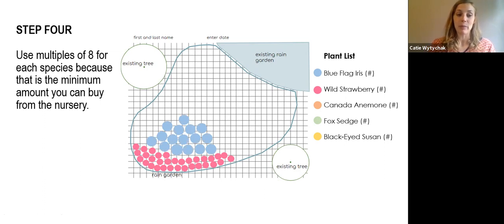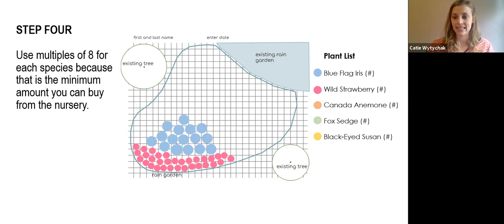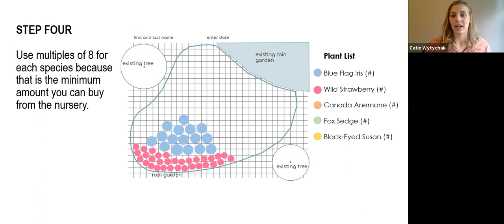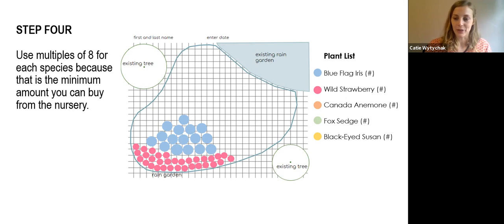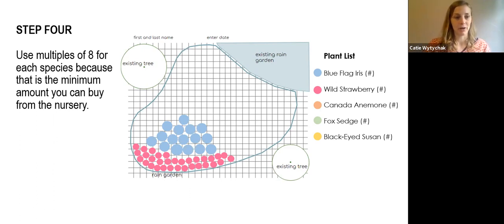When you go to buy plants, nurseries will usually have a minimum order number for each species. The nursery that we're going to use requires that you have at least eight of each species, and then you have to have multiples of eight. For my wild strawberry, I want a lot of them, so maybe I'll have 32. Whereas my blue flag iris, maybe I just want 16 of those. So you can do as many circles as you want, but it does need to be a multiple of eight — so there's a little bit of math involved.